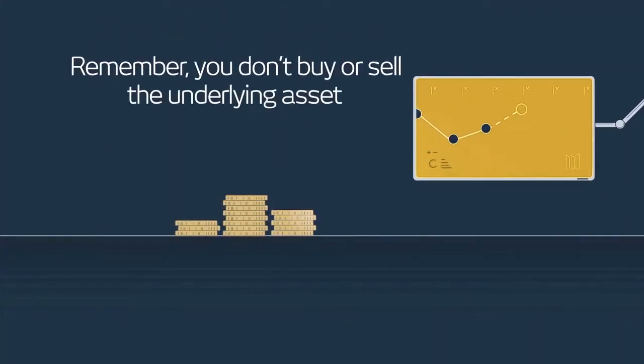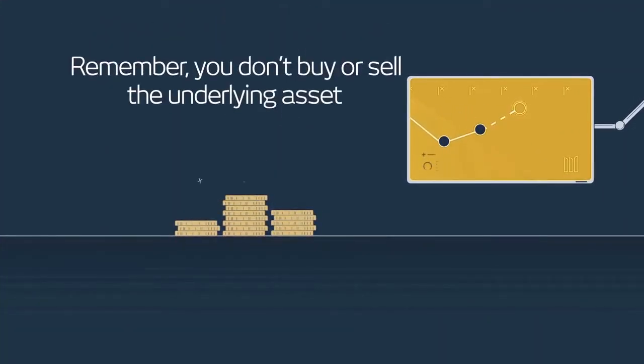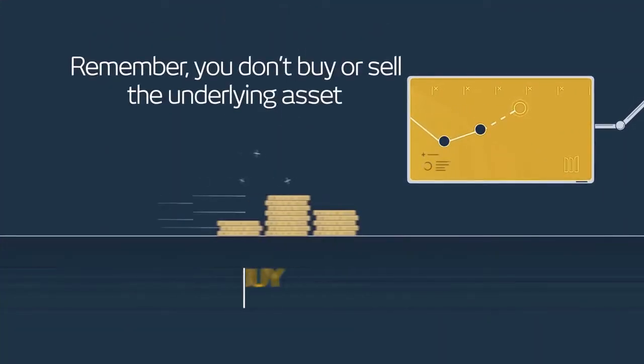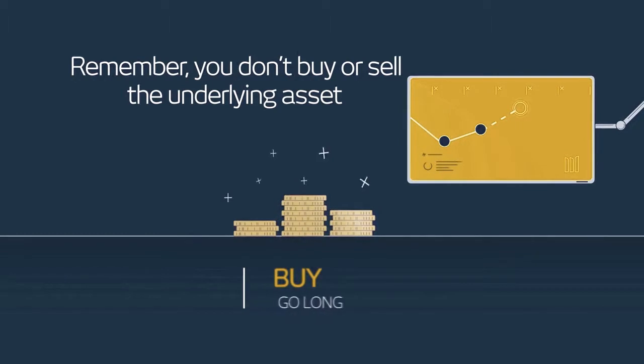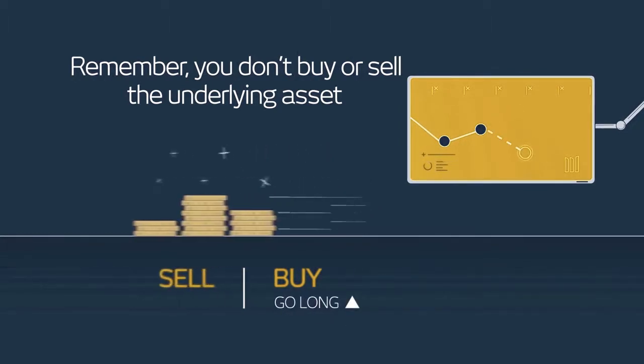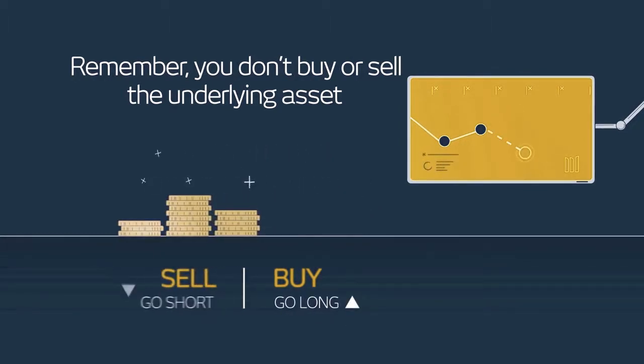If you think the product will go up in value, you can buy a number of units or go long. If you think the product will fall in value, you can sell a number of units or go short.